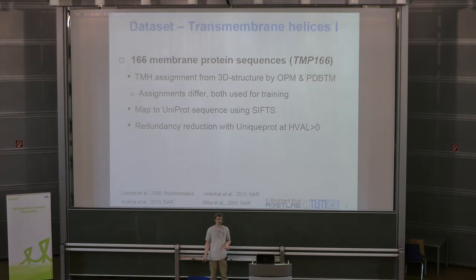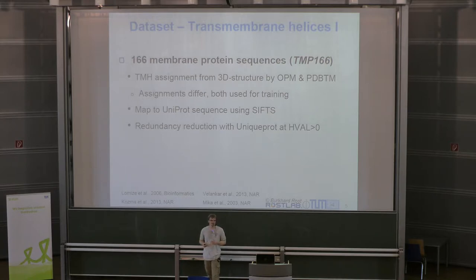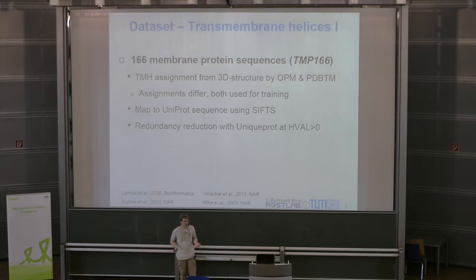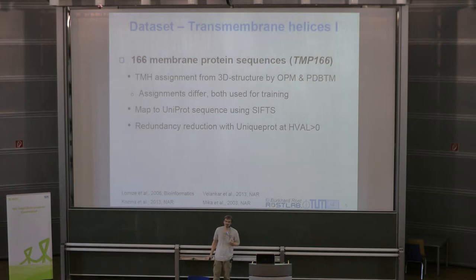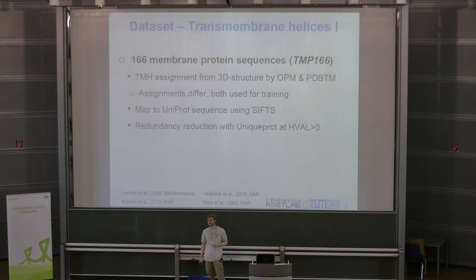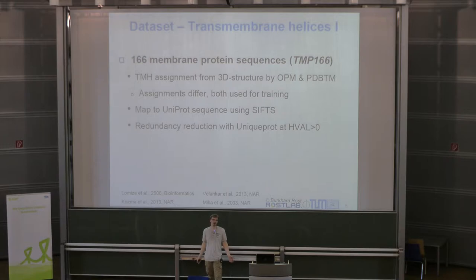For mapping I used another database called SIFTS, which holds many different IDs for the same sequence across databases — PDB, SwissProt, TrEMBL, and basically all popular protein databases. I also had to reduce redundancy in my dataset. The original set of transmembrane proteins extracted from those two databases was around 1,000, but many proteins were resolved multiple times in PDB. After reducing redundancy using UniProt and filtering out similar proteins, I was left with only 166 transmembrane proteins.